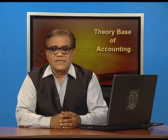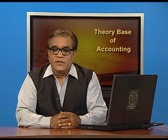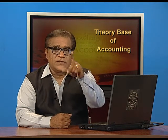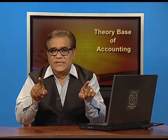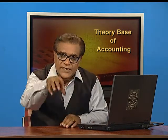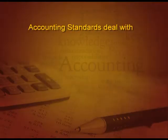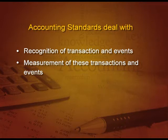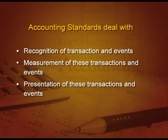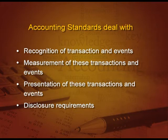Suppose somebody is not following a particular standard — they must explain why they are not following it, and what is the financial effect of that, so that the person using the statement is clear that this particular organization is not following this standard, and must take the results and decisions with that in mind. Accounting standards deal with four things: first, they recognize the transactions and events which are to be recorded in the books of account; second, measurement of these transactions and events; third, presentation of these transactions and events in the books of account; and fourth, the very important disclosure requirement — what has to be disclosed and how it has to be disclosed in the books.